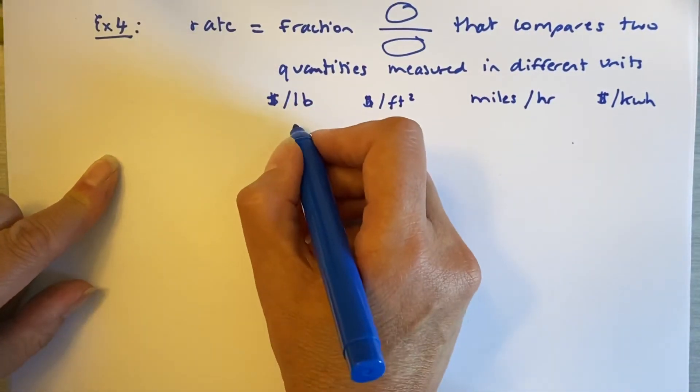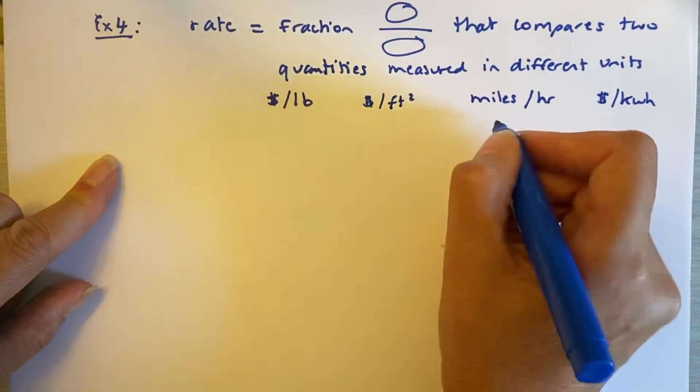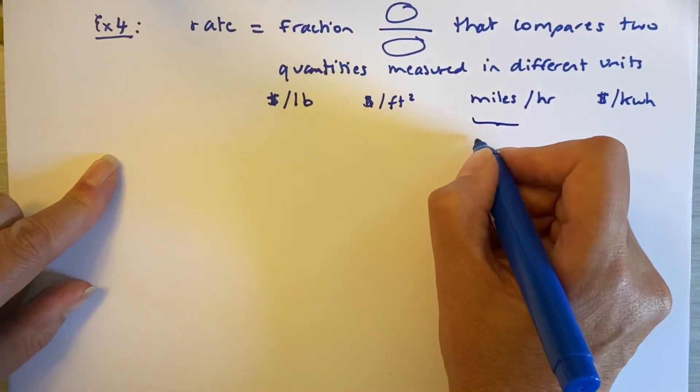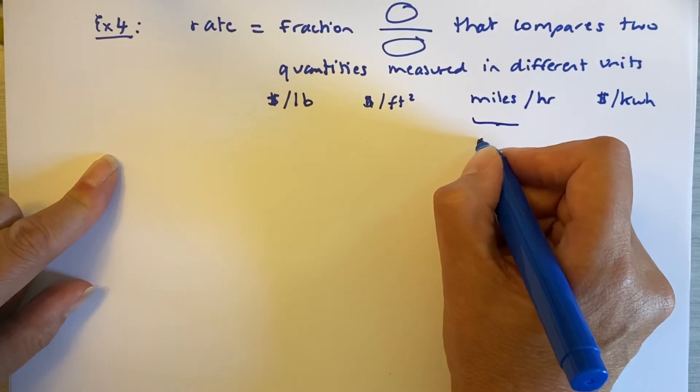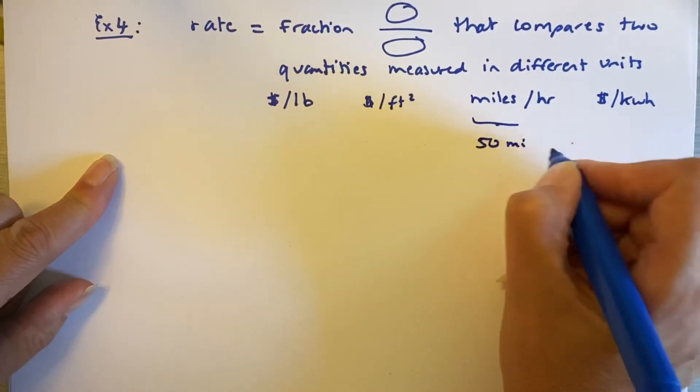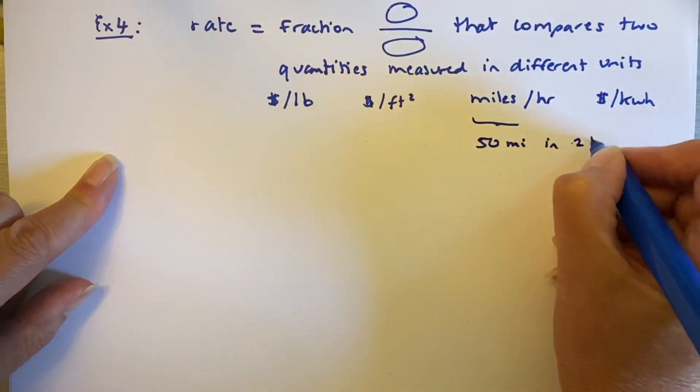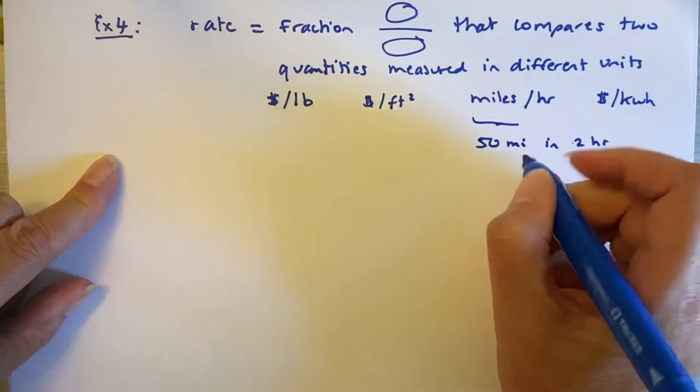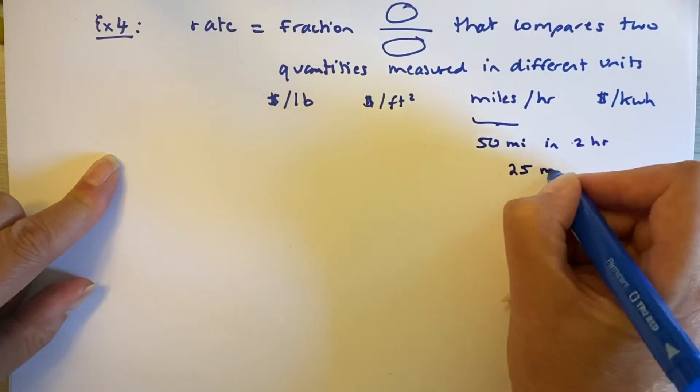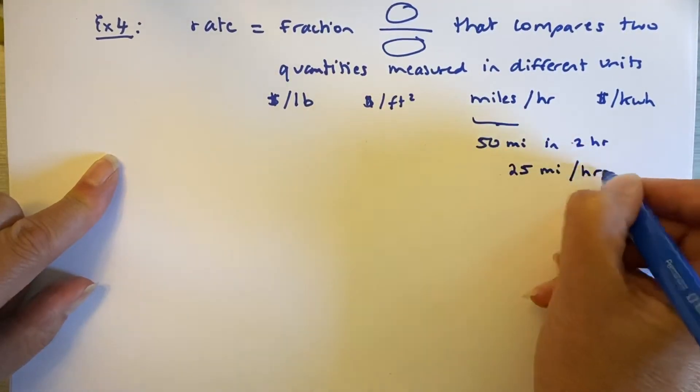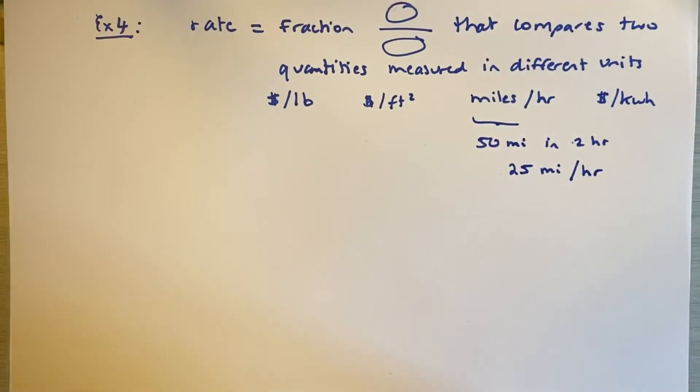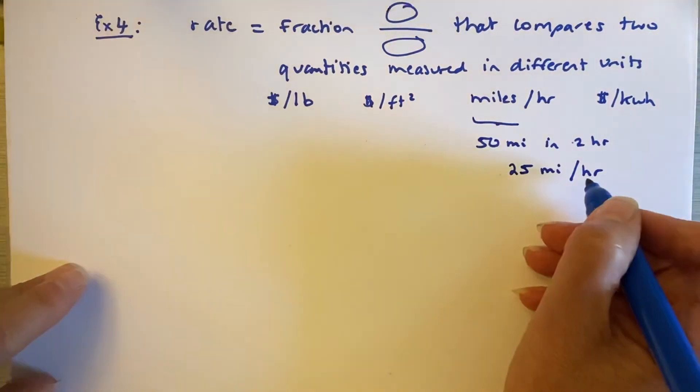And most of the time when we do rates, we try to put it in the easiest possible form. So if you've gone 50 miles in two hours, which I hope you didn't do because that's dreadfully slow, you're going 25 miles per hour. Because for a rate to be meaningful, you need to put it in terms of a unit rate.